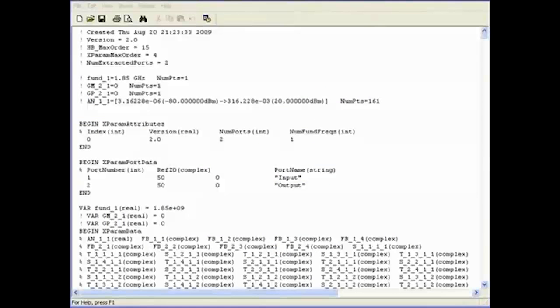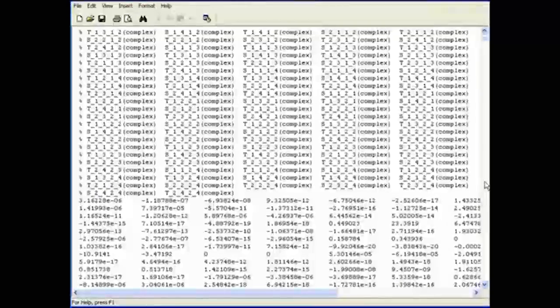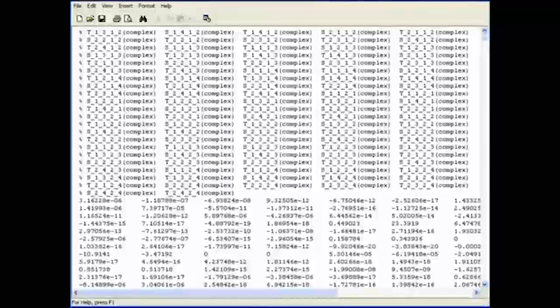And this is how the generated model looks like. It contains all incident and scattered signals at all ports, at all frequencies, power levels, and at all other swept parameters such as bias, temperature, and other.